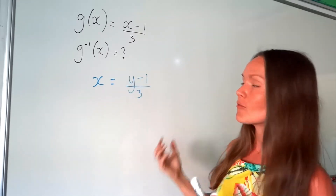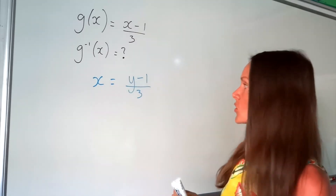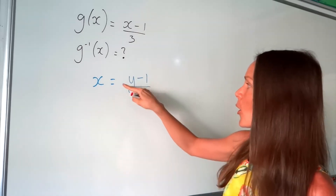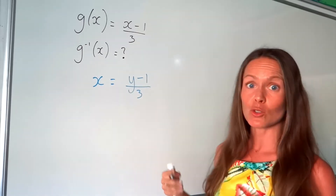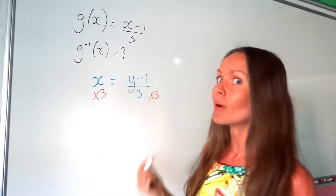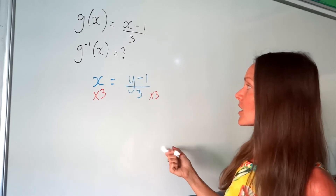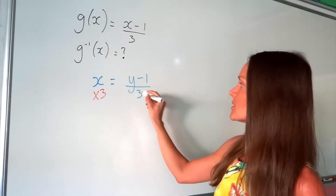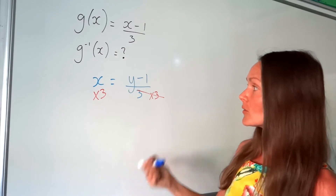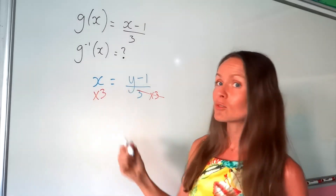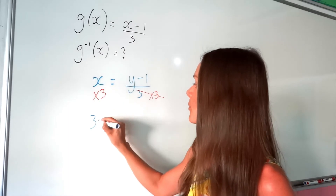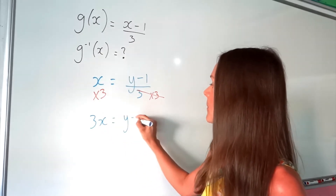I need to undo everything that's happening around y. First, I need to get rid of this fraction. The opposite of dividing by 3 is to multiply, so I multiply both sides of my equation by 3. On the right-hand side, where I do the opposite, that just cancels and I'm left with y minus 1. And on the left-hand side, x multiplied by 3 is 3x. So I'm left with 3x equals y minus 1.